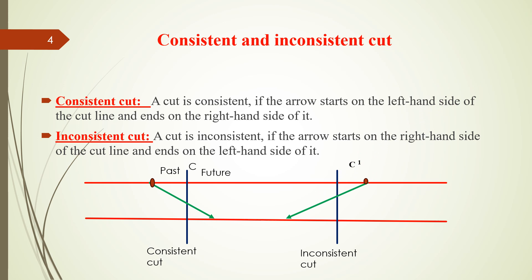What is consistent and inconsistent cut? A cut is consistent if the arrow starts on the left-hand side of the cut line and ends on the right-hand side of the cut line. We can say the region left to the cut line is the past region and the region right to the cut line is the future region.